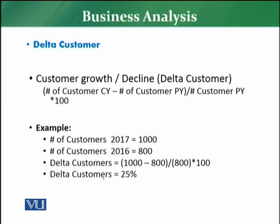Delta customers uses exactly the same parameter — it measures how your number of customers has grown or declined. The formula is: number of customers current year minus number of customers previous year, divided by number of customers previous year, multiplied by 100. If the change is positive, delta customers is positive, meaning customer growth.